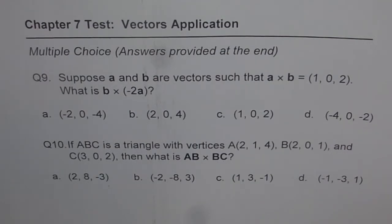Question 10: If ABC is a triangle with vertices A(2, 1, 4), B(2, 0, 1), and C(3, 0, 2), then what is AB cross BC?